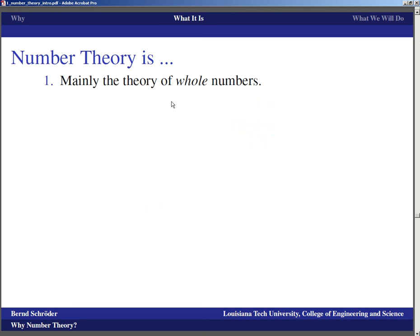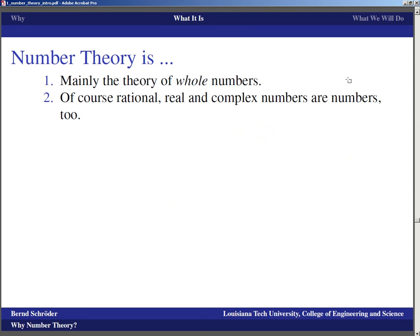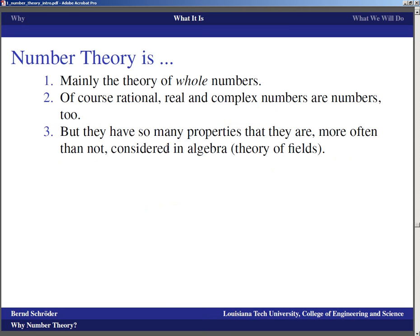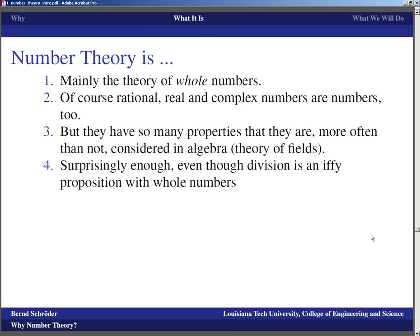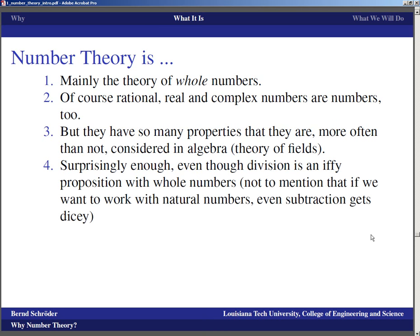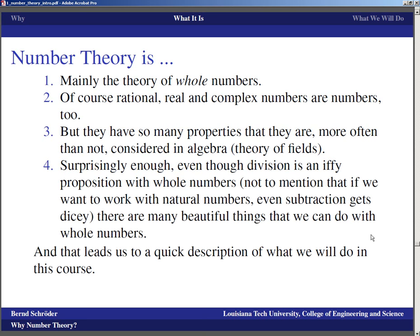Okay, so what is number theory? Number theory is mainly the theory of whole numbers. It really is the theory of integers. That does not mean that rational numbers, real numbers, and complex numbers aren't numbers. They are numbers too. But they have so many properties that they are more often than not really considered in algebra, because they are what is called fields. They are something where we can also divide. There are more properties out there. They are not a discrete number system like the whole numbers, which are all basically isolated from each other. Surprisingly enough, even though division is an iffy proposition with whole numbers, not to mention if you work with natural numbers you even have trouble with subtraction, there are quite a few beautiful things that we can do with whole numbers, including division of whole numbers.